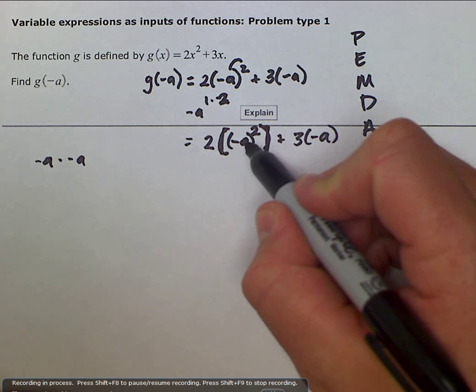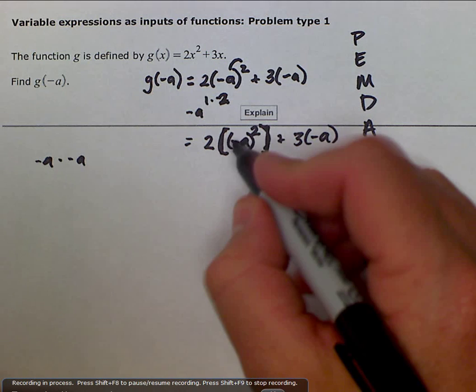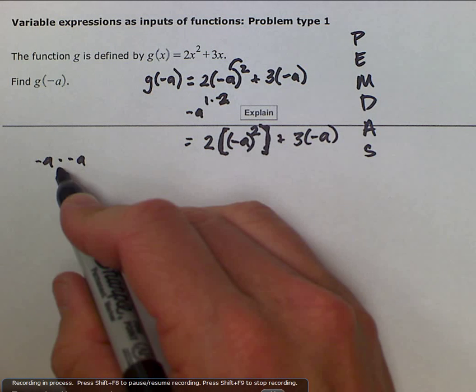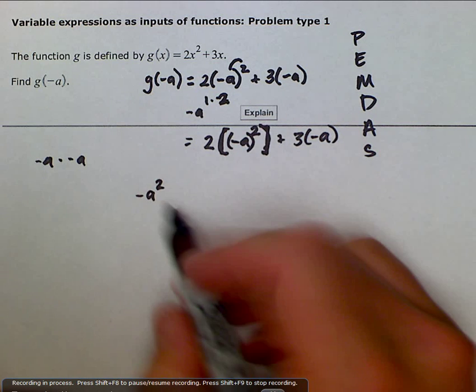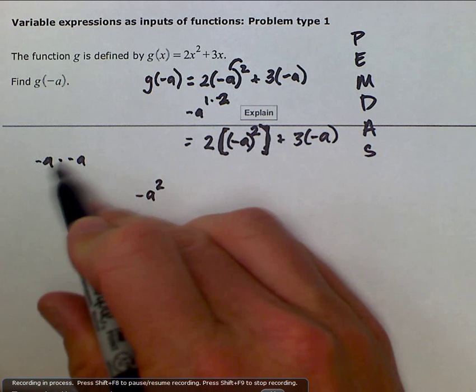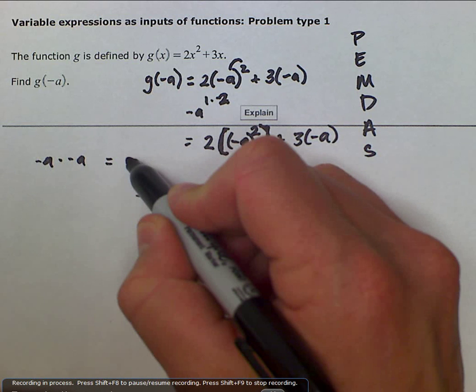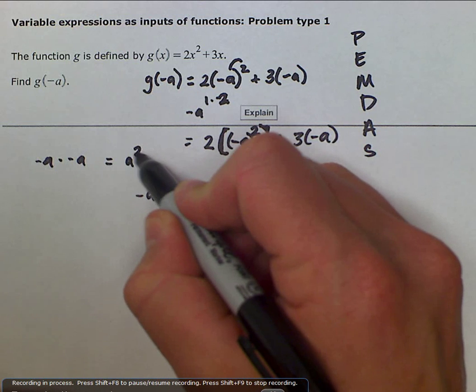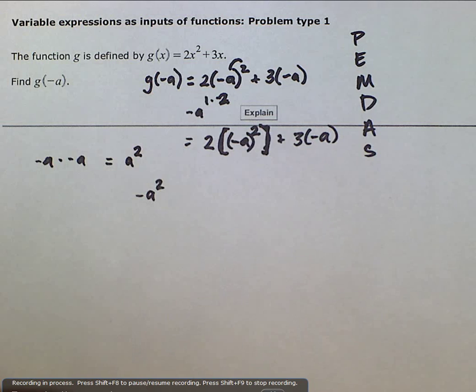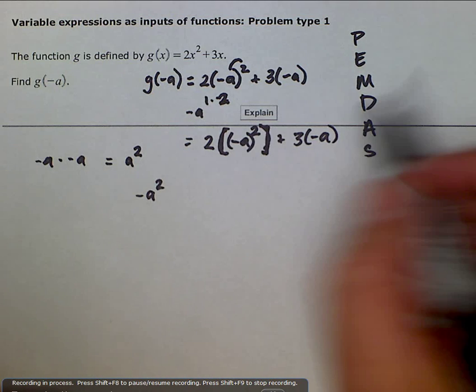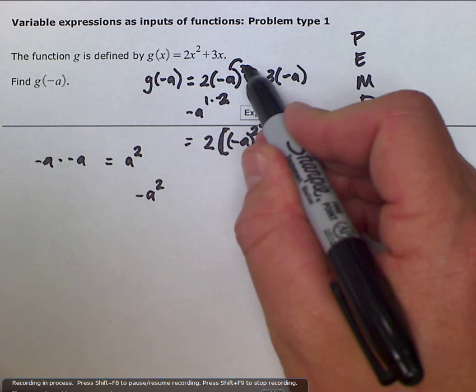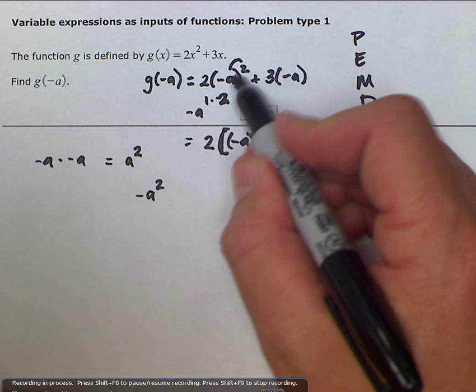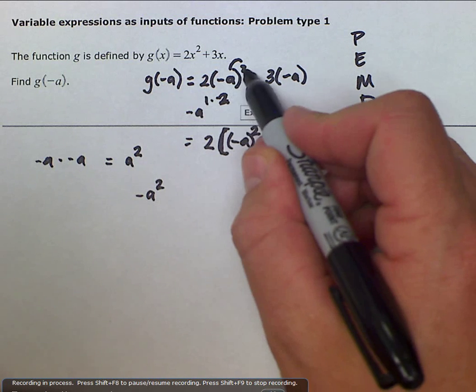A negative a squared with parentheses is negative a times negative a, which is going to be a positive a squared. As opposed to a negative a squared without parentheses. So we raise negative a to our exponent first. Negative a times negative a is a positive a squared.